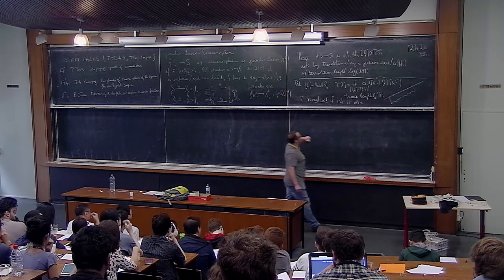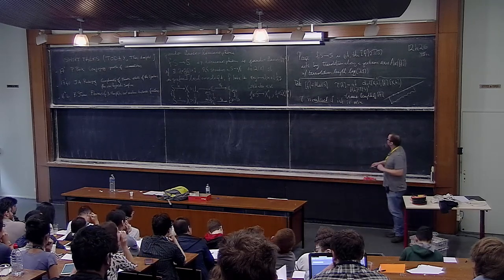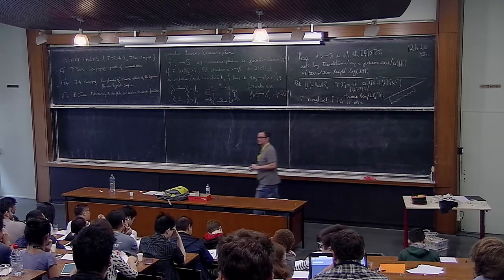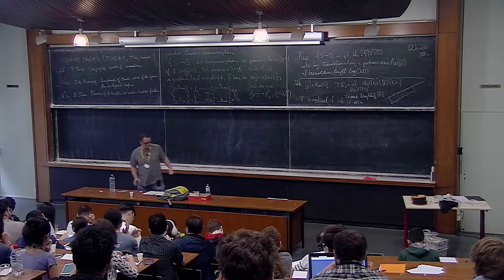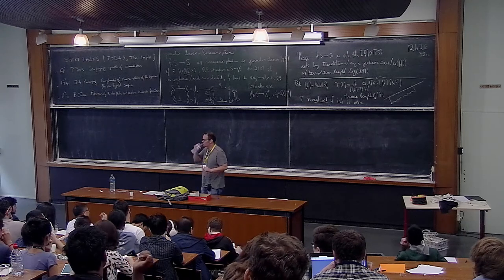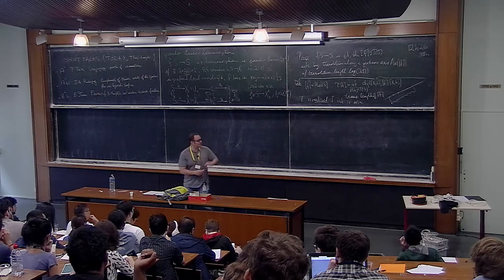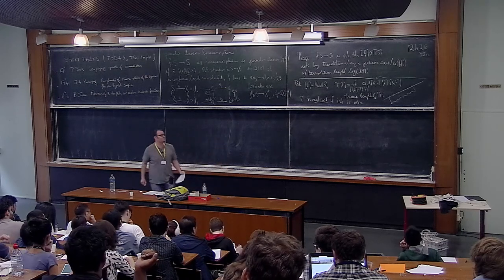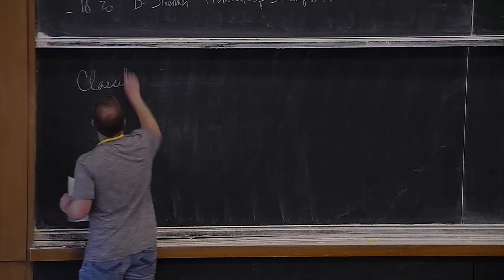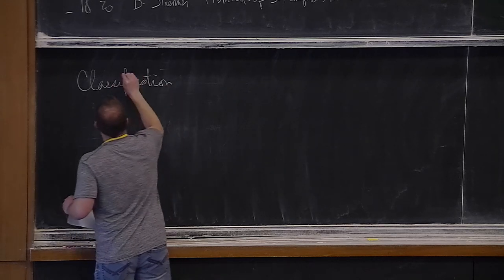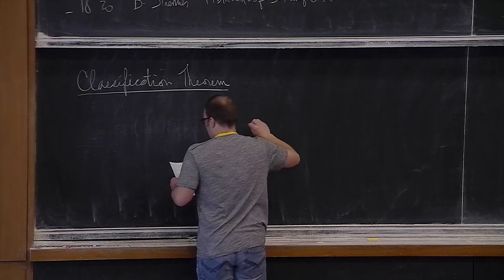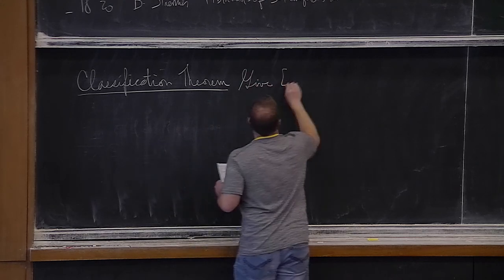The proposition says that for pseudo-Anosovs, the translation length is positive — in fact equal to log lambda_F — and it is realized. They are the unique ones that are positive and realized. Let me state the classification theorem in a way that has a bit more information. This is really Thurston's work. Nielsen's name is attributed because he did a lot of work studying elements of the mapping class group and got very close to this classification from a different perspective.